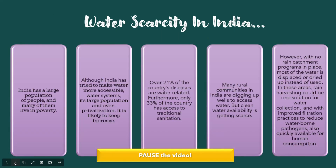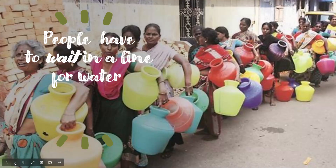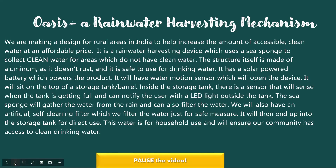The water scarcity problem in India is a very big one. Oasis is a rainwater harvesting mechanism. This product will help people in rural India get access to clean drinking water.